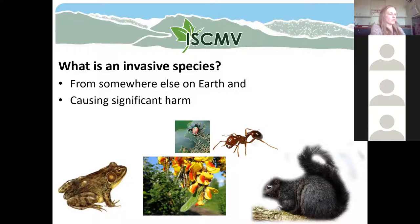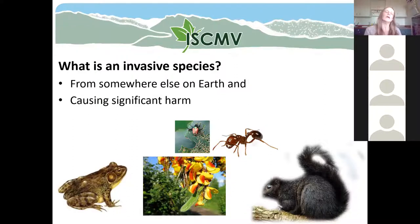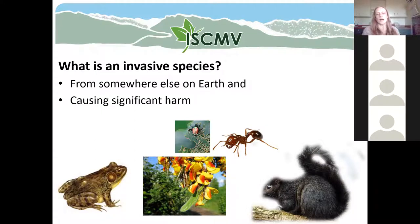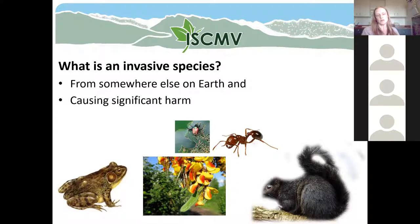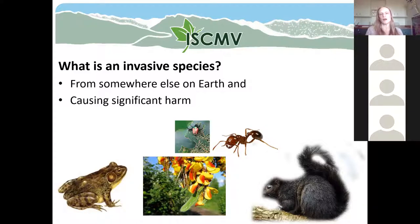Before we get into the different local species, I want to talk about what an invasive species is, because that's a big part of my job — teaching people about invasive species and what to do about them. Invasive species are a very small group of living things that are from somewhere else on earth, moved to a new habitat, where they're causing significant harm. Maybe they're doing environmental damage, harming human health, or causing economic problems — destroying infrastructure or being costly to manage. Any living thing can be invasive, but we certainly have our share of invasive plants.